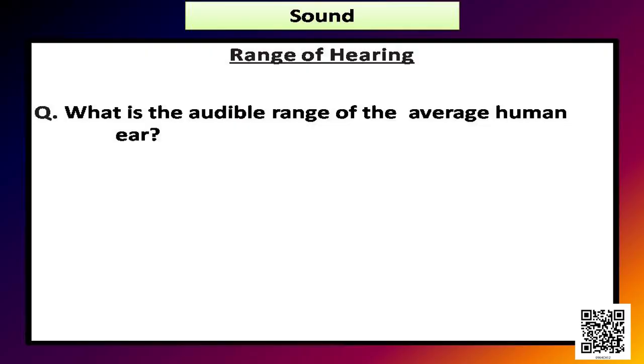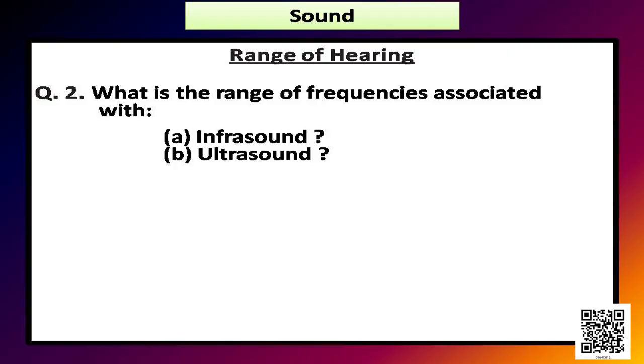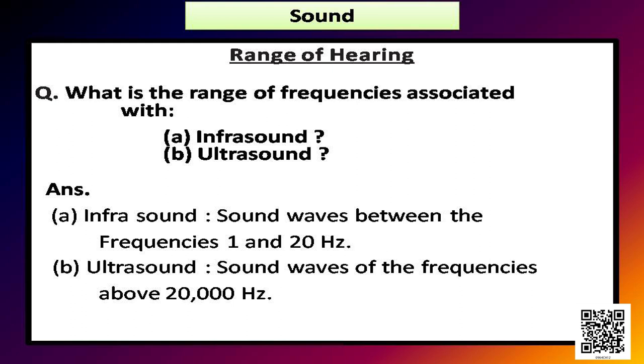Let us now discuss some questions from the book. The first question: what is the audible range of the average human ear? The audible range of the average human ear is from 20 Hz to 20,000 Hz. The next question: what is the range of frequencies associated with infrasound and ultrasound? For infrasound, the range is less than 20 Hz, and for ultrasound it is greater than 20,000 Hz.